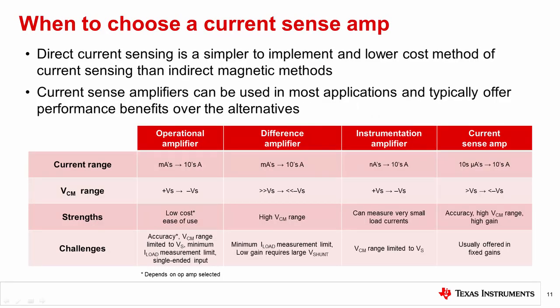Direct current sensing is a simpler to implement and lower cost method of current sensing than indirect magnetic methods. And current sense amplifiers offer the most comprehensive set of features to maximize current measurement performance for the widest range of applications. The table shown on this slide summarizes the four types of amplifiers we have discussed in this video.